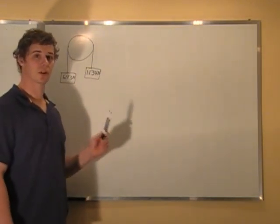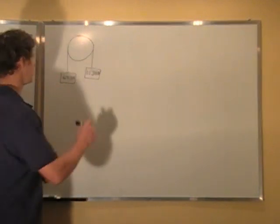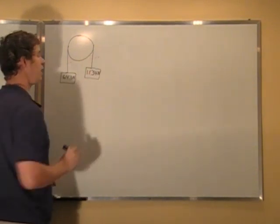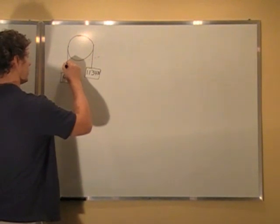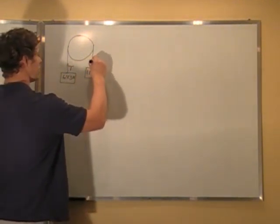So the key to this one is drawing a correct free body diagram. So what we do is we basically take our magic scissors and cut. And whenever we cut we have to put a force in.